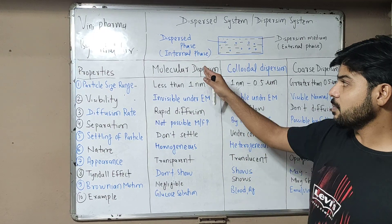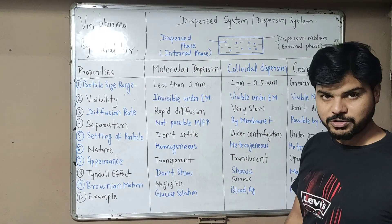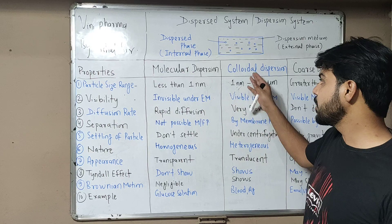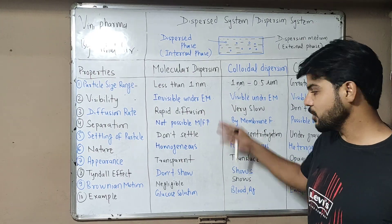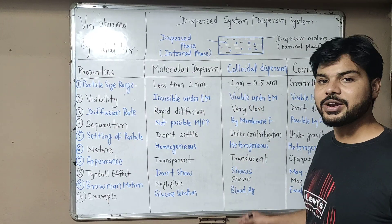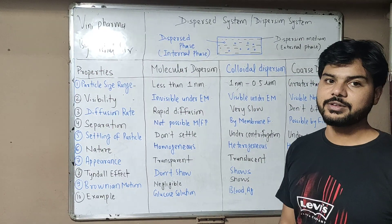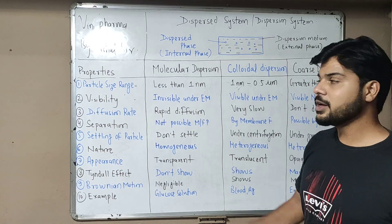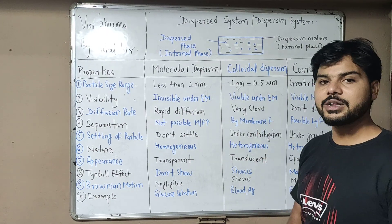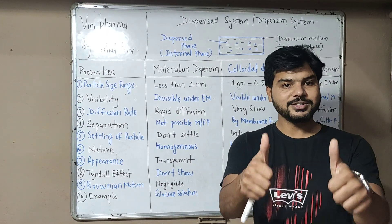If you want to know more about molecular dispersion and true dispersion, those can be explained in detail across 10 points. Colloidal dispersion can similarly be defined in 10 points, and coarse dispersion will be covered separately in upcoming classes. Thank you and all the best.